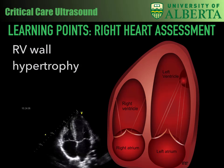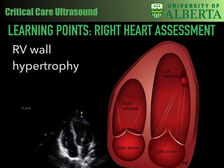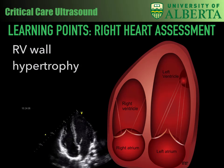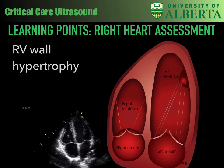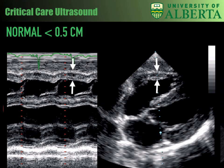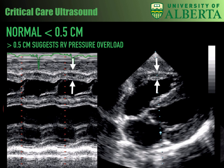Moving on to RV wall hypertrophy. Interestingly, the RV wall can thicken in as little as 48 hours after exposure to increased afterload and increased pressure. We can measure the RV free wall in the subcostal four-chamber view at end diastole, measuring edge to edge. Less than 0.5 cm or 5 mm suggests normal. When greater than 0.5 cm, this suggests RV wall hypertrophy, which may occur as a consequence of RV pressure overload. This is one other helpful item which may help you characterize a patient's presentation.